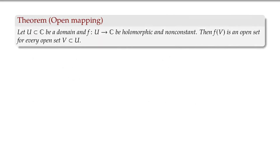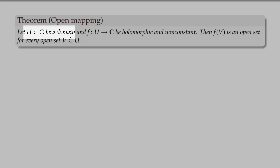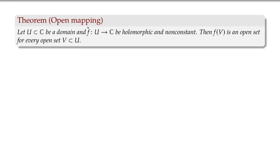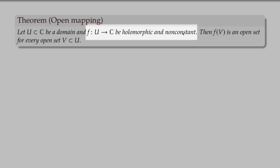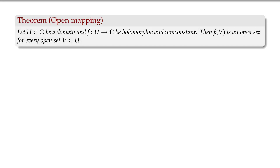Here is a more precise version. Suppose that we have a domain — and it's important that it is connected — and suppose that we have a non-constant holomorphic mapping F. Then the image F(V) is an open set whenever V is an open subset of U. It takes open sets to open sets — it's an open mapping.